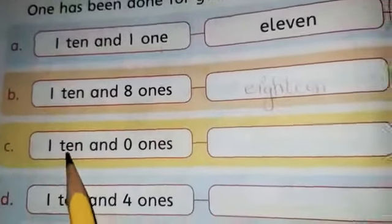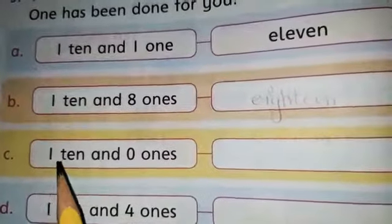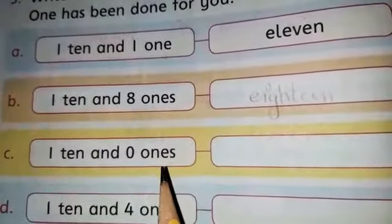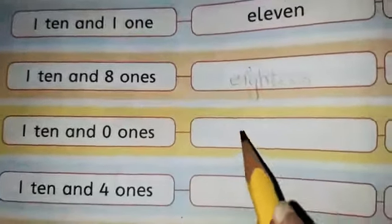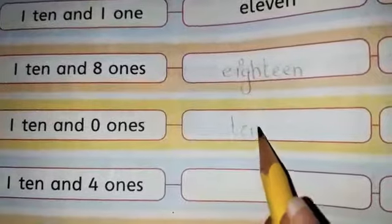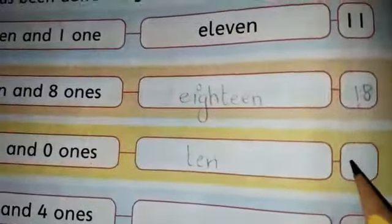In part c one ten and zero ones. One ten and zero ones become ten. One ten and zero ones becomes ten. T-E-N ten. Okay my dear students complete this page. Take care students, Allah hafiz.